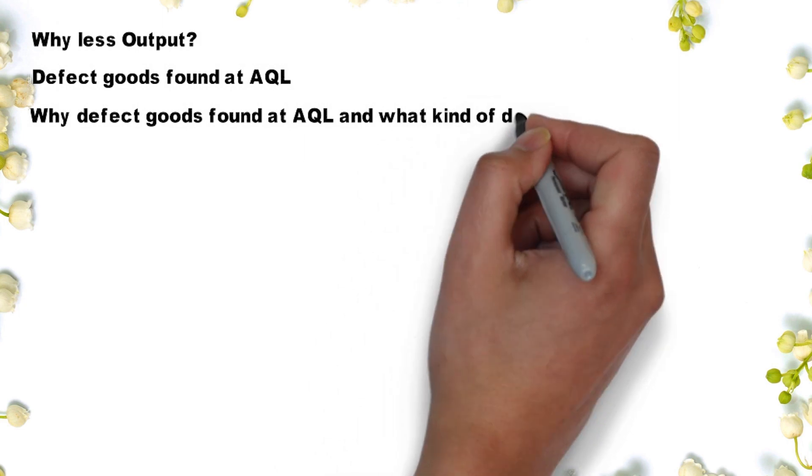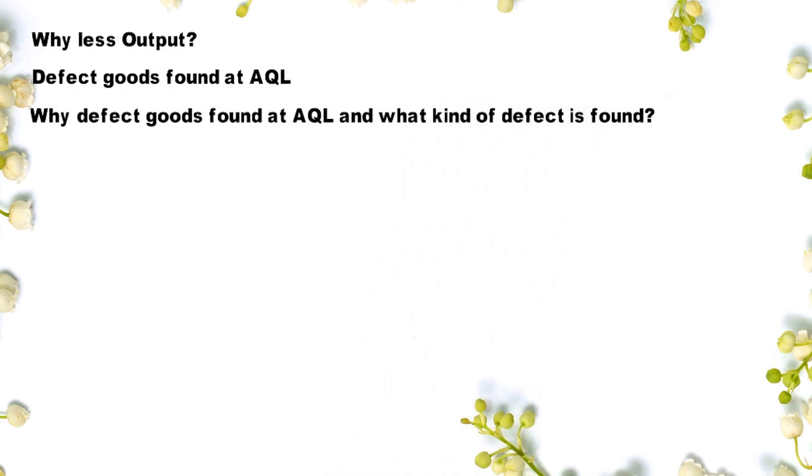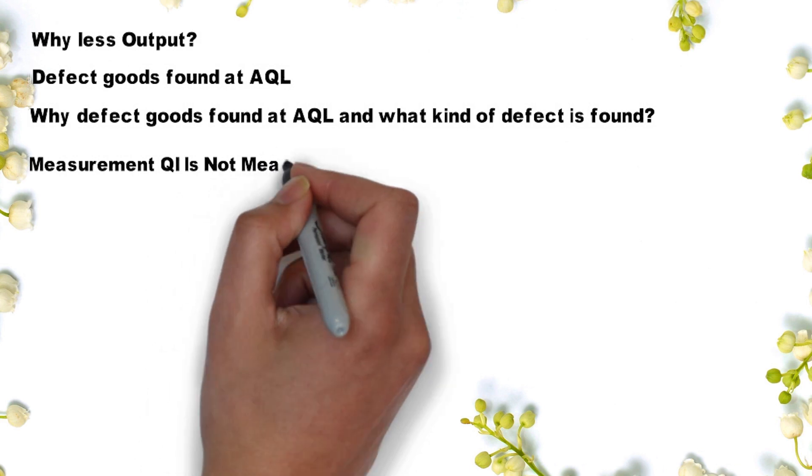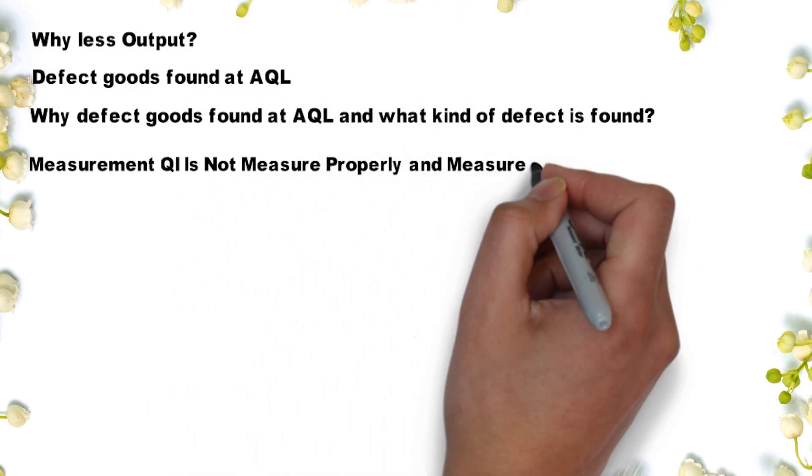Why less output? Defect goods found at AQL. Why defect goods found at AQL and what kind of defect is found?